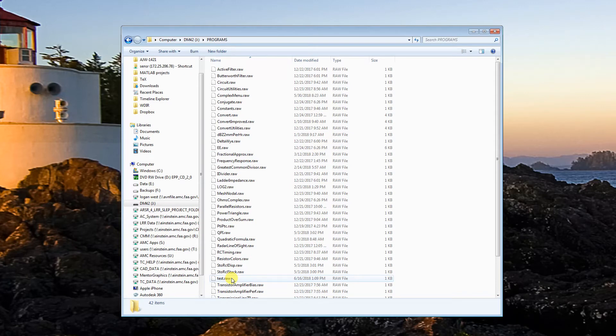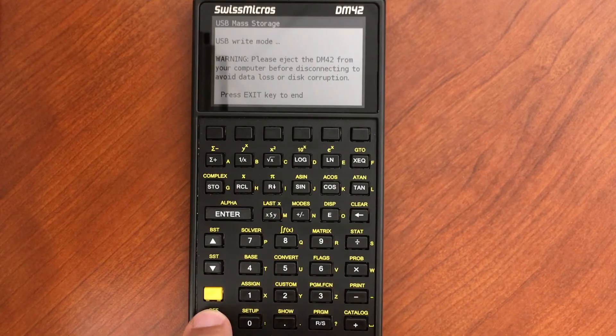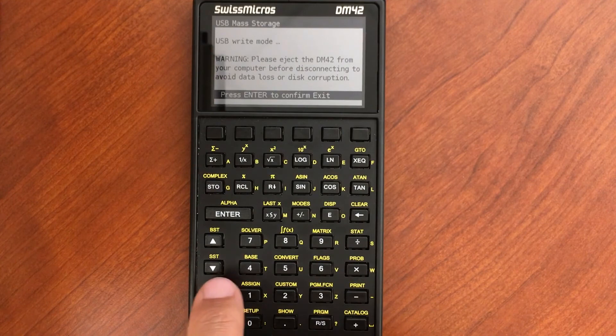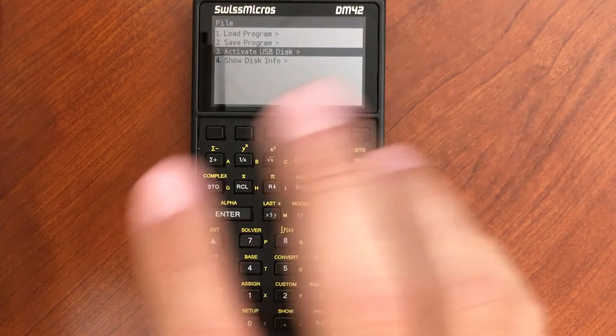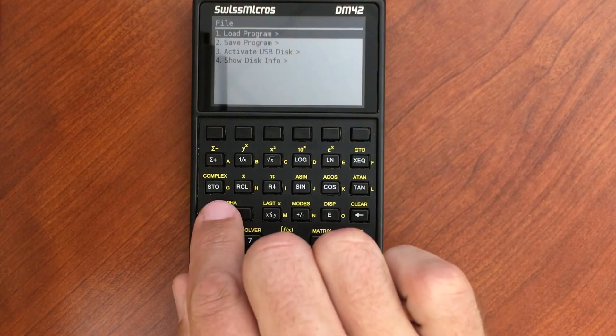Then when they come back to their calculator, let's go ahead and go back to the calculator. So back here, if I exit out of the calculator, hit Exit, Enter, exit out of USB mode. Now I'm going to go to Load Program.